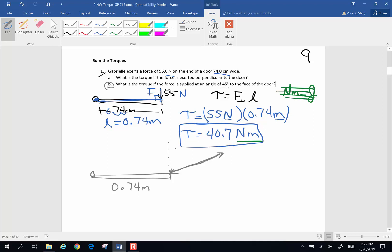And what we want is only the proportion of that force that is perpendicular to the door itself. So if this is 55 Newtons, I have a 45 degree angle. I only want to use the portion of the force that is perpendicular to this lever arm.